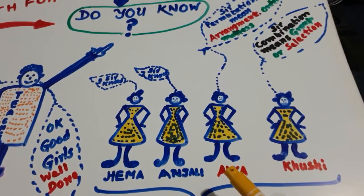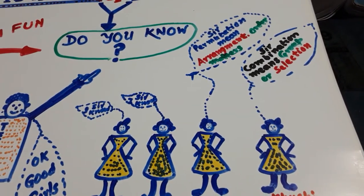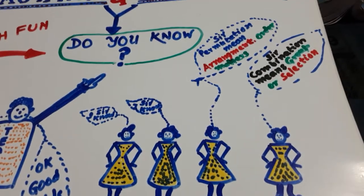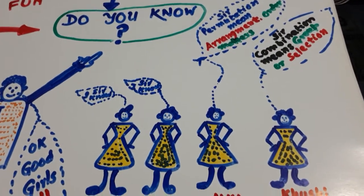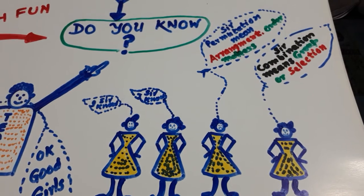So this is what permutation and combination is. This is a very important chapter, very easy chapter also. And you will learn with fun.